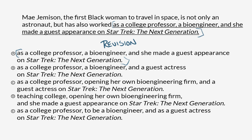All of these choices are likely going to have a similar kind of error, and the correct choice is going to correct that error. So let's see if we can find an error in this underlined portion. We've got 'as a college professor, a bioengineer, and she made a guest appearance on Star Trek: The Next Generation.' There's nothing grammatically incorrect, but what's going on here is a problem in parallel structure. Parallel structure is when you have a list of things, they should all be the same type of thing.